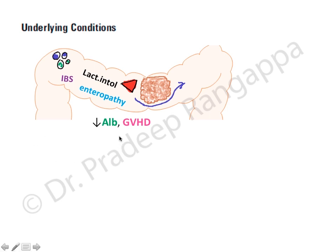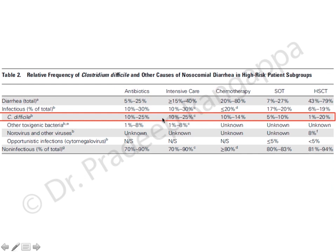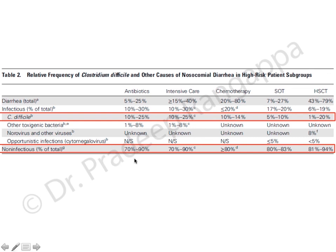Looking at Clostridium difficile as a cause across subgroups - in patients receiving antibiotics, intensive care patients, and patients receiving chemotherapy - the occurrence rate is consistently about 10 to 25 percent. Strikingly, non-infectious causes account for 70 to 90 percent of diarrhea across all categories, even in solid organ transplant where 80 to 83 percent is non-infectious.